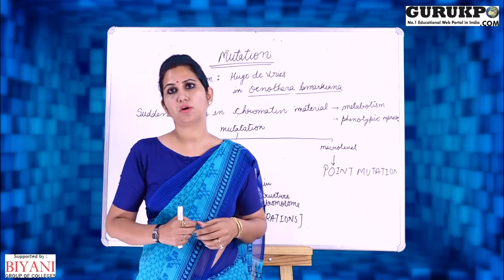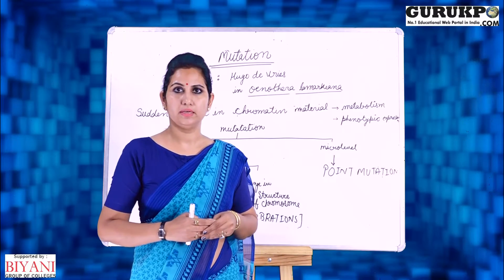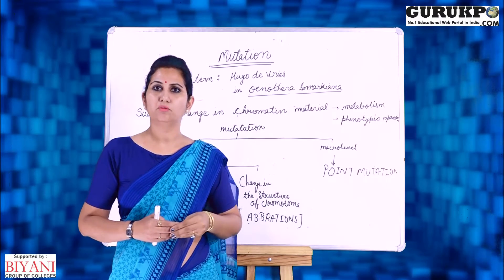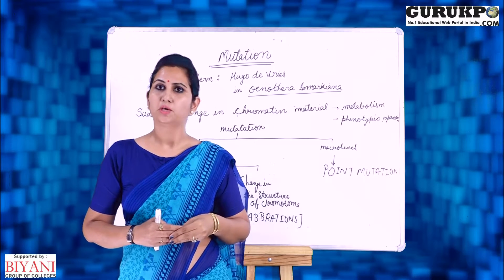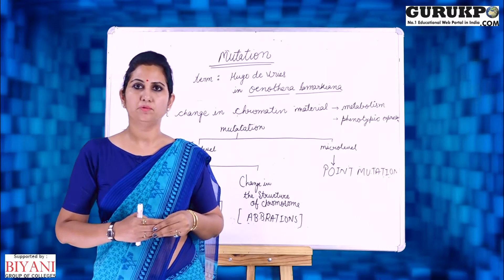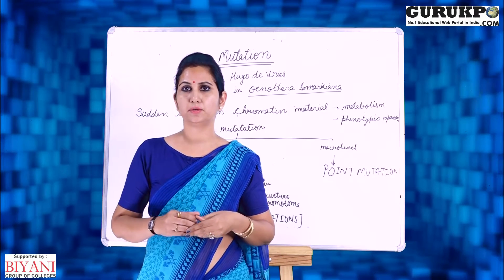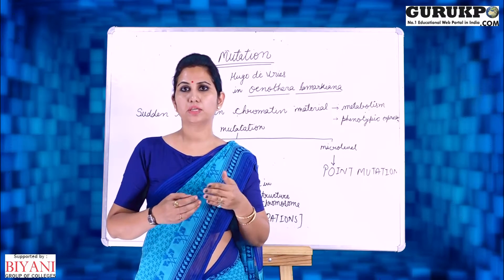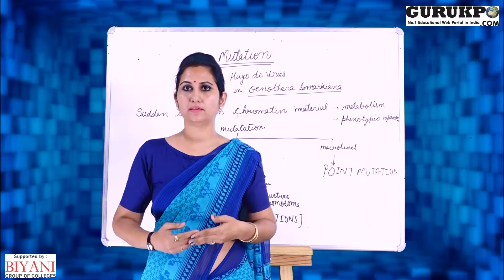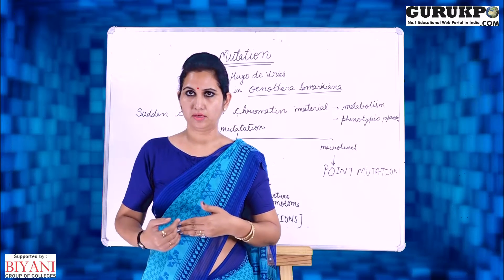Mutation was first discovered in Oenothera lamarckiana, and the term mutation was coined by Hugo de Vries in 1901. Mutations are broadly divided into two types: one is the mutation which occurs on the macro level, and another is the mutation which occurs on the micro level.